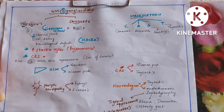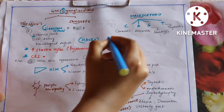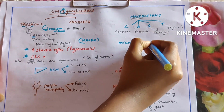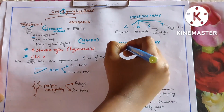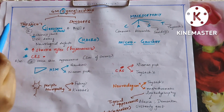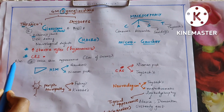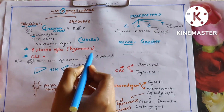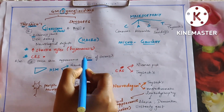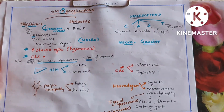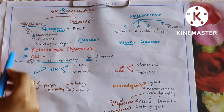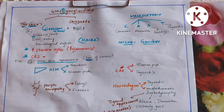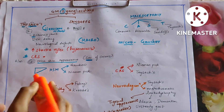Remember the mnemonic CAST: Canavan's disease, Alexander disease, Sandhoff's, and Tay-Sachs — all present with macrocephaly. Canavan's and Alexander are entirely different diseases but are remembered under macrocephaly, whereas Gaucher's is microcephaly. In GM2 gangliosidosis, Tay-Sachs has an onion skin appearance (sac of onions) seen on electron microscopy.